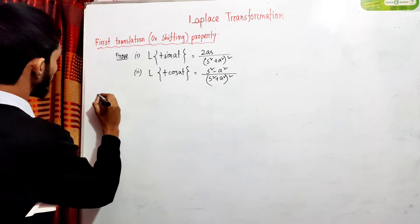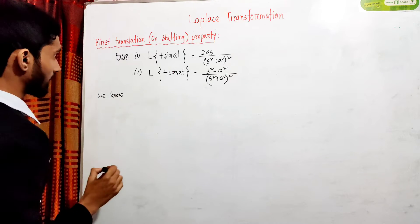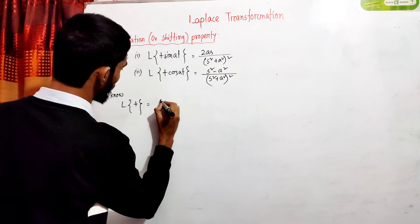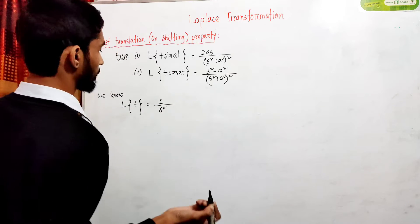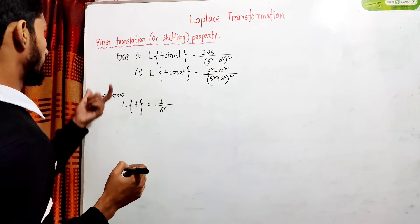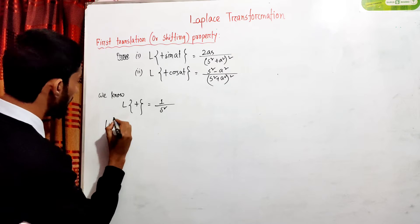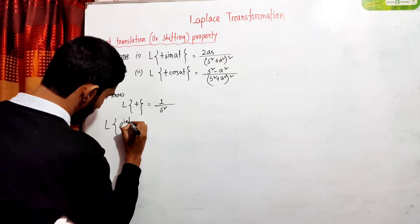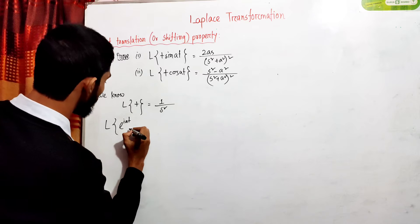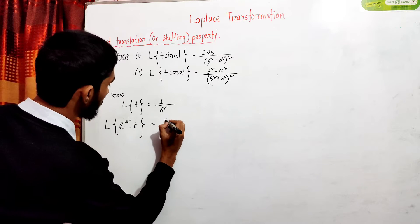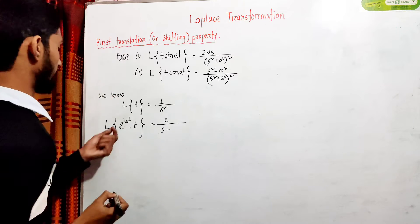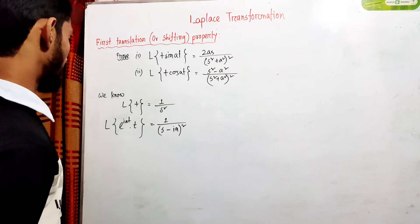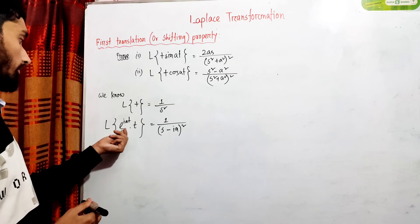We have to use the Laplace transformation for 1 by S squared. The first translation theorem states that the transform of e to the power at — multiplied by e to the power at, and also e to the power minus iat. This is the power at.